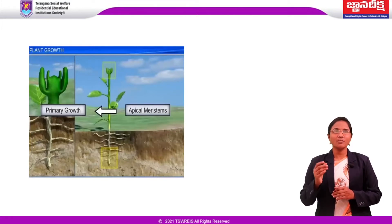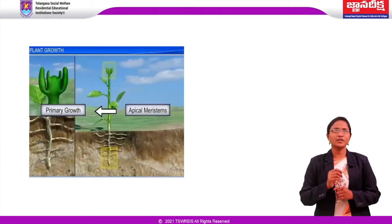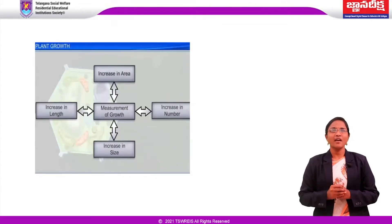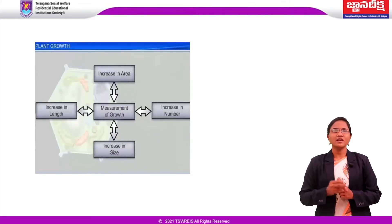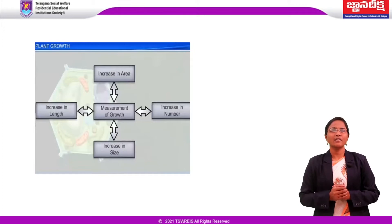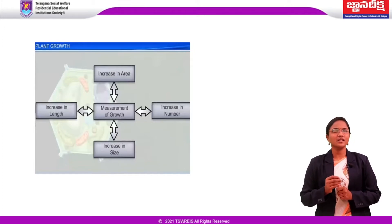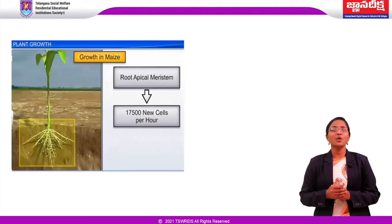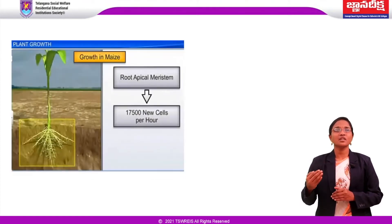Growth is conspicuous, meaning obvious to the eyes. Growth is measurable by a variety of parameters, some of which are increase in fresh weight, dry weight, length, area, volume and cell number. A single maize root apical meristem can give rise to more than 17,500 new cells per hour.